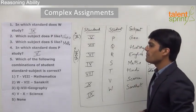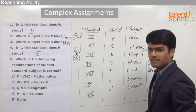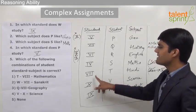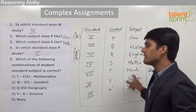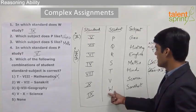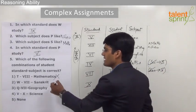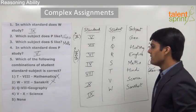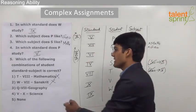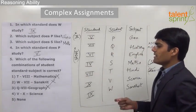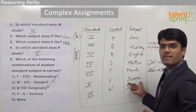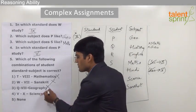The last question is: which of the following combinations of student, standard, and subject is correct? The first option is T in 8th standard with favorite subject mathematics — T does study in 8th standard but his favorite subject is Hindi, so option 1 is ruled out. The second option is W in 7th standard with Sanskrit — W studies in 9th standard, so option 2 is cancelled. The third option is Q in 7th standard with geography — Q does study in 7th standard but his favorite subject is history, so option 3 is wrong. The last option is V in 10th standard with science — V does study in 10th standard and his favorite subject is science, so option 4 is the correct answer.